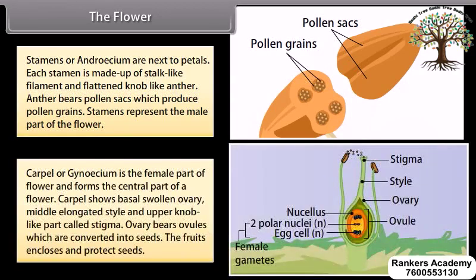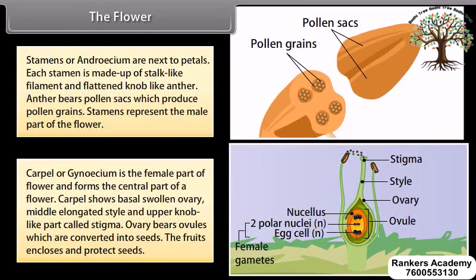Carpel, or gynoecium, is the female part of a flower and forms the central part of a flower. The carpel shows a basal swollen ovary, a middle elongated style, and an upper knob-like part called the stigma. The ovary bears ovules which are converted into seeds. The fruit encloses and protects the seeds.